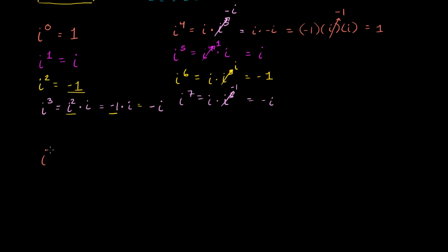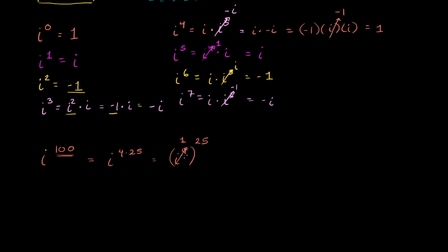Just for fun, let's see what i to the 100th power is. The realization here is that 100 is a multiple of 4. So you could say that this is the same thing as i to the 4 times 25th power. From our exponent properties, that's i to the 4th power raised to the 25th power — because raising something to an exponent and then to another exponent is the same as multiplying the two exponents. i to the 4th is just 1, so this equals 1 to the 25th power.